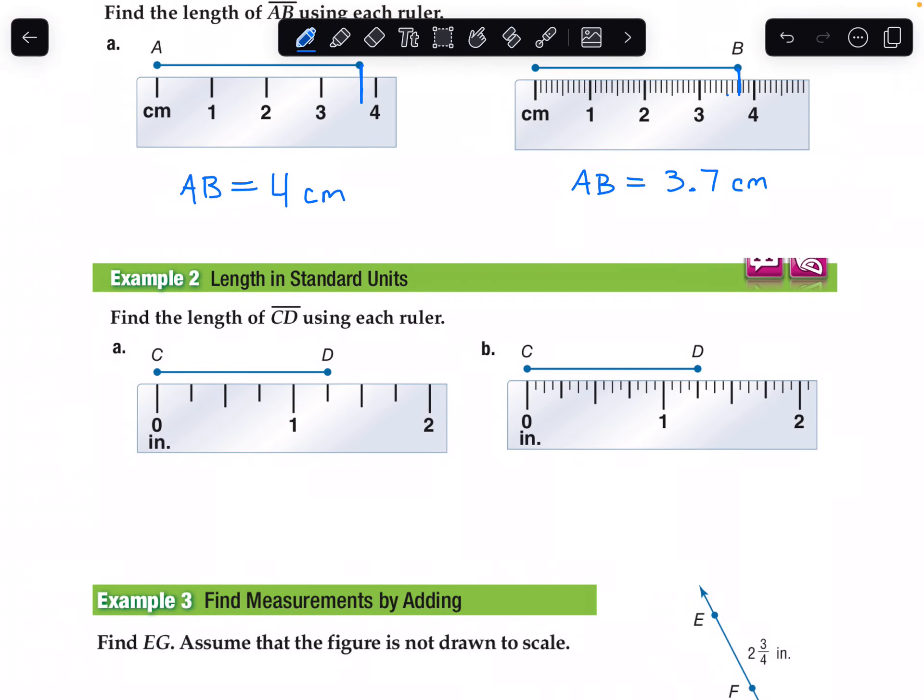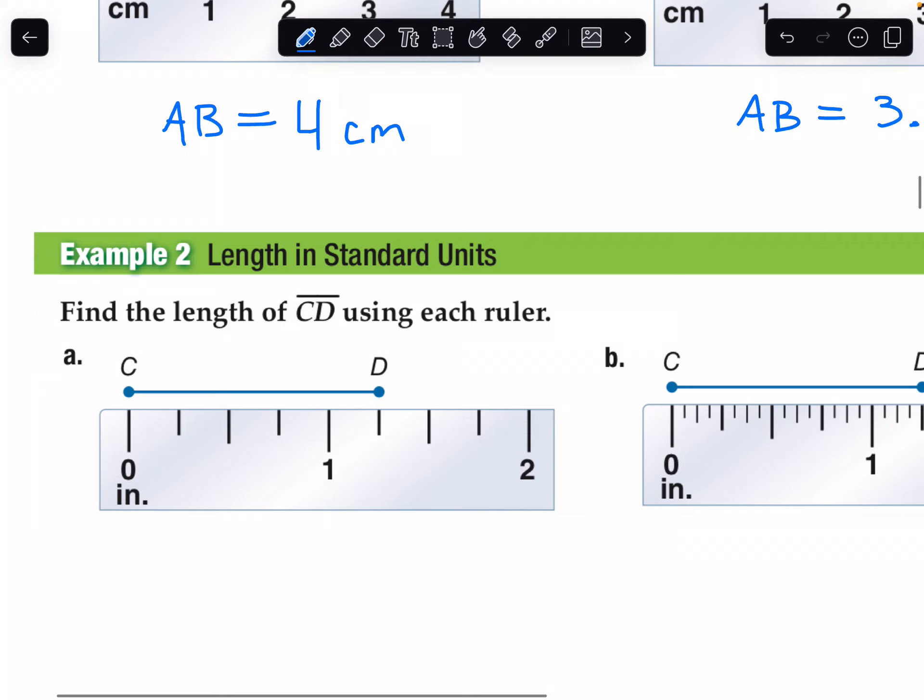Example 2, length in standard units. Find the length of segment CD using each ruler. Here we are in inches. C is on the zero mark. D is here, past the one inch mark, less than two. Let's count: one, two, three, and then four places would take you to two. So the smallest mark here is in fourths. This would be one fourth more than one. So CD is one and one fourth inches.